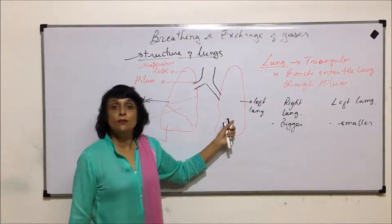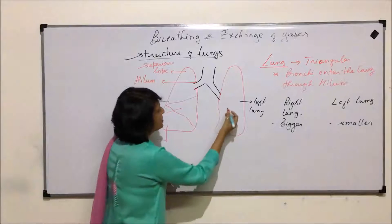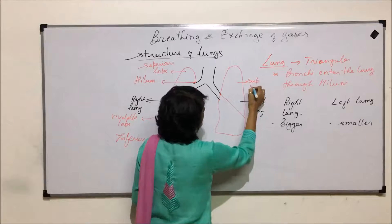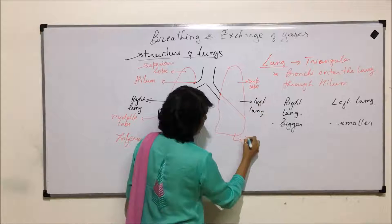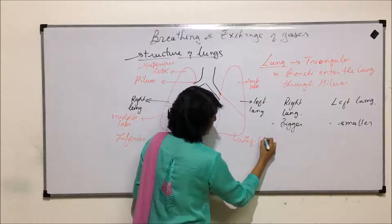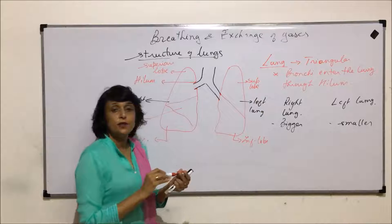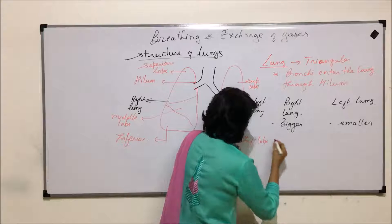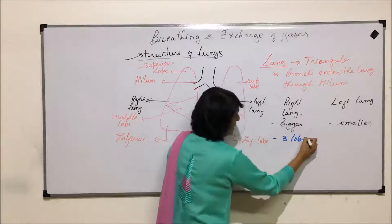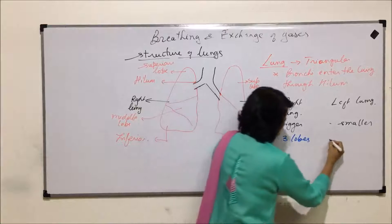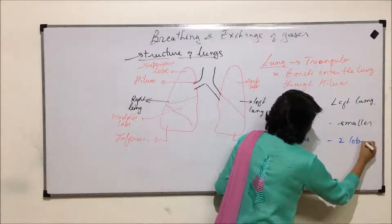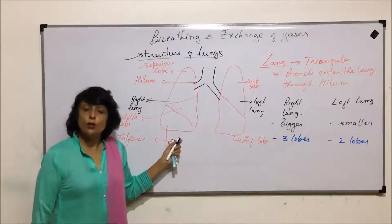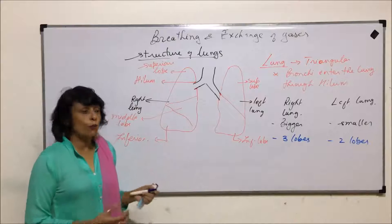As compared to that, the left lung has only two lobes — the superior lobe and the inferior lobe. So the other difference between the right and the left lung is the number of lobes: three in the right and two in the left.